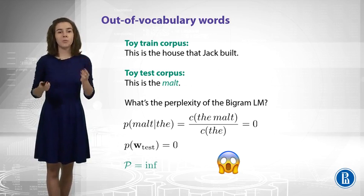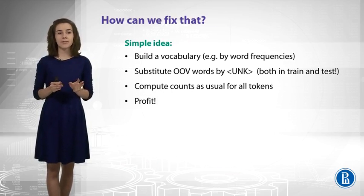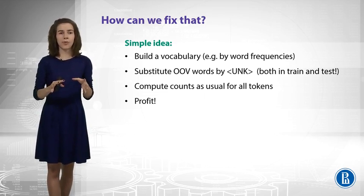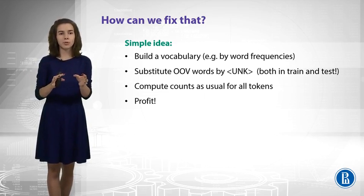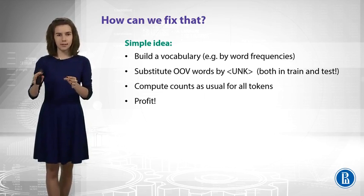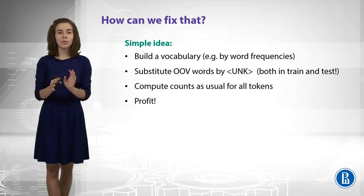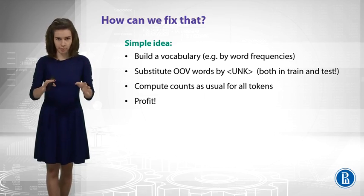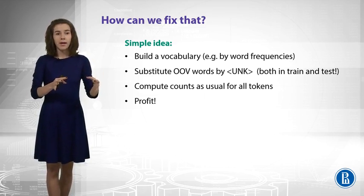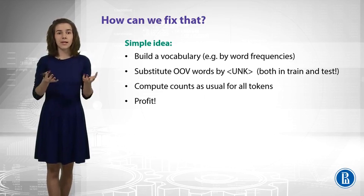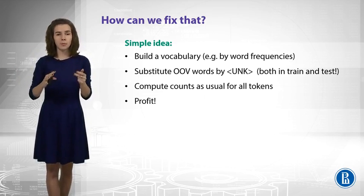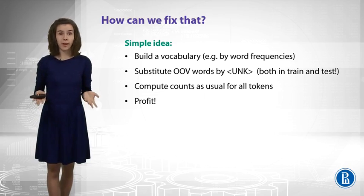Well, there is actually a very simple way to fix that. Let us say that we have some vocabulary. We build some vocabulary in beforehand, just by some frequencies or we just take it from somewhere. And after that, we substitute all out-of-vocabulary tokens for train and for test sets for a special UNK token. Then we compute our probabilities as usual for all vocabulary tokens and for the UNK token, because we also see this UNK token in the training data. And this is what we can use, because now when we see our test data, we see there are only vocabulary tokens and UNK token and we compute probabilities for all of them.